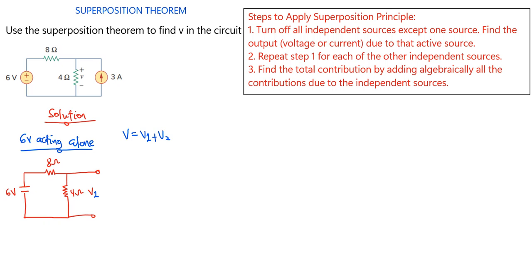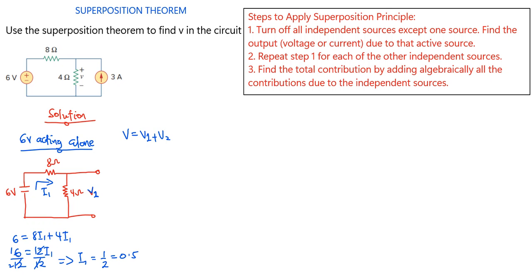To find V1, we need to find the total current flowing through the circuit, because V1 equals the current through the 4 ohms times 4 ohms. So we have 6 volts equal to 8·I1 plus 4·I1, which gives 6 equals 12·I1. Dividing both sides by 12, we get I1 equals 1/2, or 0.5 amperes. So V1 equals 4 times 0.5, which gives us 2 volts.